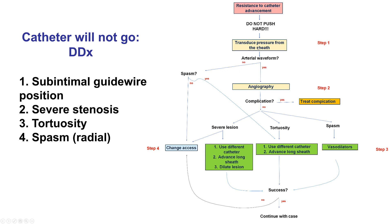The pressure is first transduced, and assuming it is good, an angiogram is done to clarify the problem. It can be a severe lesion, approached by using a different catheter, getting a long sheath through the lesion if it's in the iliac territory, or by dilating and potentially stenting the lesion. In extreme cases, one may have to change the access point. If there is significant tortuosity, a long sheath can be used, or a different catheter advanced through the area. If it's spasm — mainly for radial access — vasodilators are administered.